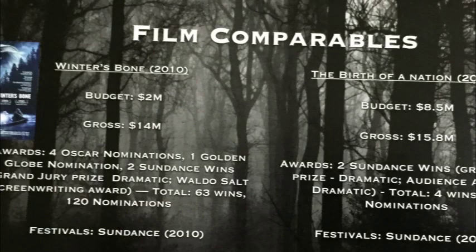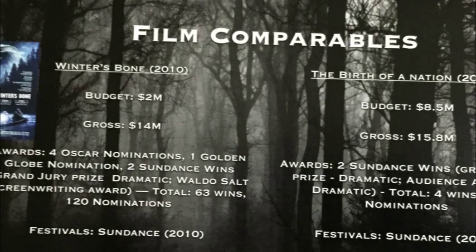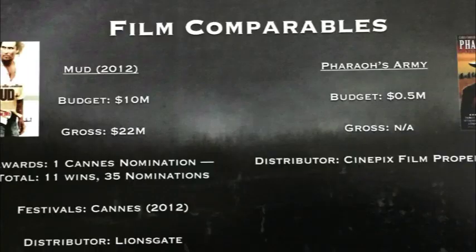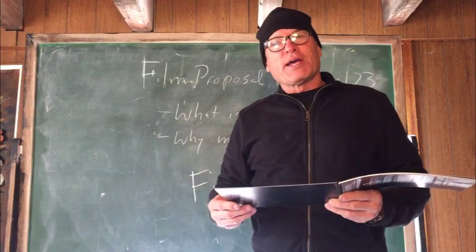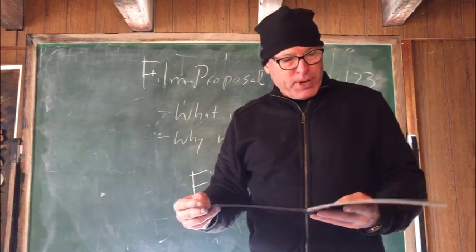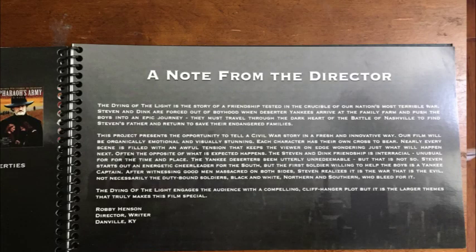This is called film comps. Comps is just a short term for film comparables. Basically, in a film comparable page you are comparing what you hope your film will make by listing other films that have made this amount of money. This is information one gets from IMDb or IMDb Pro. They actually have two pages of film comparables in this one. And then they have a note from the director, which is just another little added special sauce on the film proposal, and a nice graphic at the end.